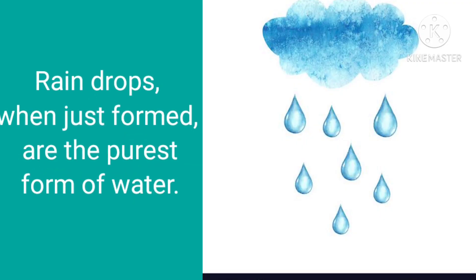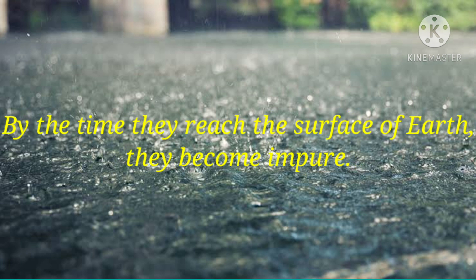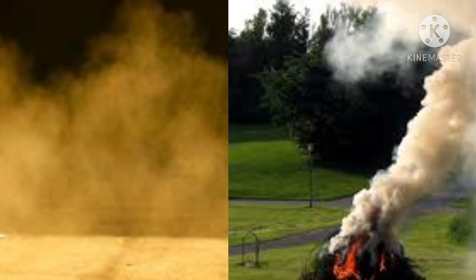Raindrops when just formed are the purest form of water. By the time they reach the surface of the earth, they become impure because they dissolve many harmful gases present in the air and also get dust and smoke mixed with them.